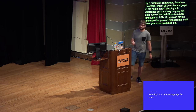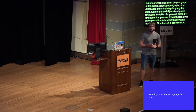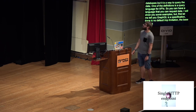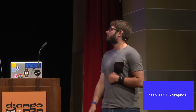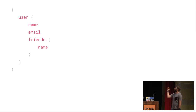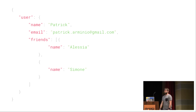GraphQL is a specification, so there is no default implementation. The base implementation uses HTTP, but you can use any other protocol. The HTTP implementation usually has one single endpoint — typically /graphql — and you do a POST request where you send your queries. You send documents in a form similar to JSON, but without the actual values. For example, you say: return me the user with their name, their email, and their friends' names. The API responds with only the data you actually requested.